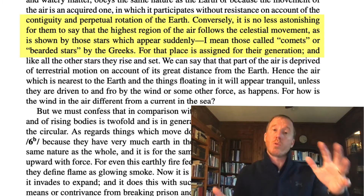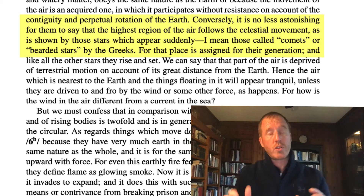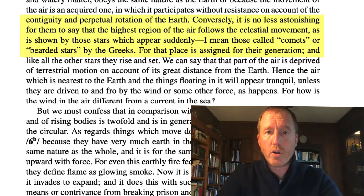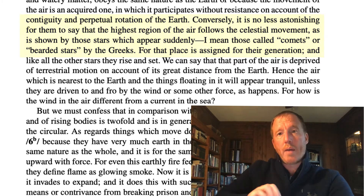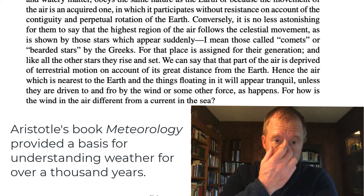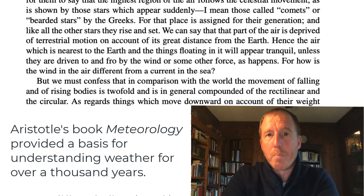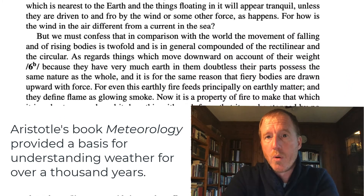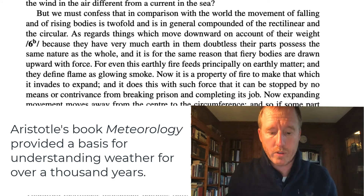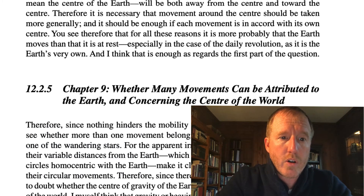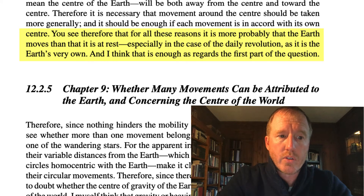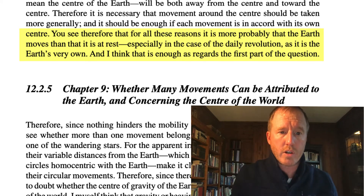He goes on to say that his opponents even argue in a similar kind of way — after all, they argued that the celestial spheres were rotating around the earth and drag the top layer of the earth's atmosphere around with them. That's how they account for the existence of meteors and comets: atmospheric phenomena where celestial spheres rub against the earth's atmosphere causing motion and heat, which generates meteors. That, by the way, is why the study of weather is historically called meteorology, because the ancients believed that meteors were an atmospheric phenomenon. By the end of chapter 8, Copernicus concludes: for all these reasons it is more probable that the earth moves than that it is at rest, especially in the case of daily revolution, as it is the earth's very own.